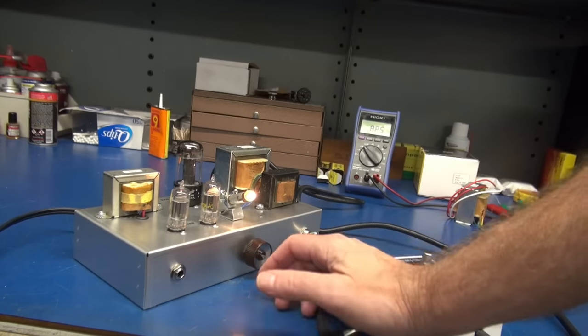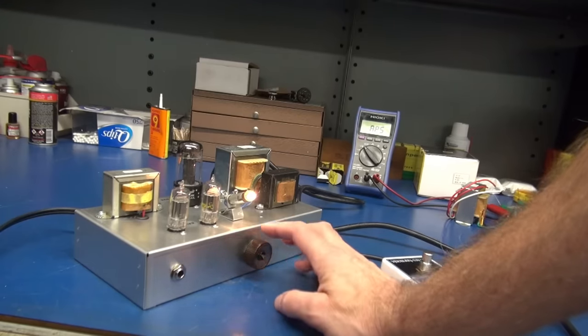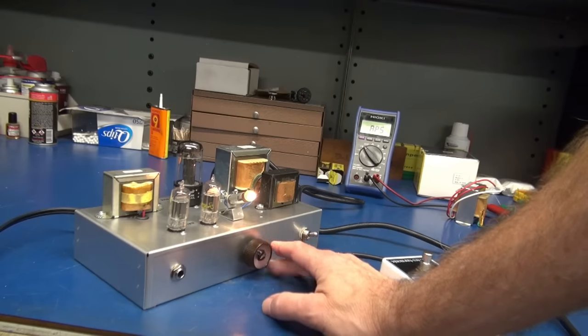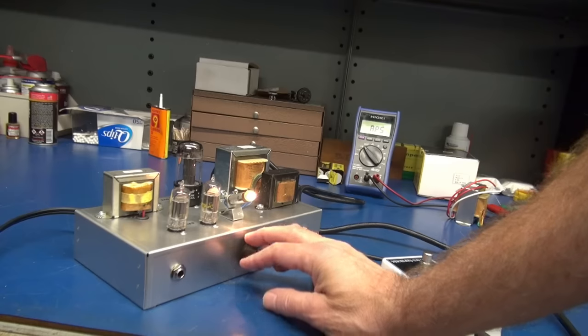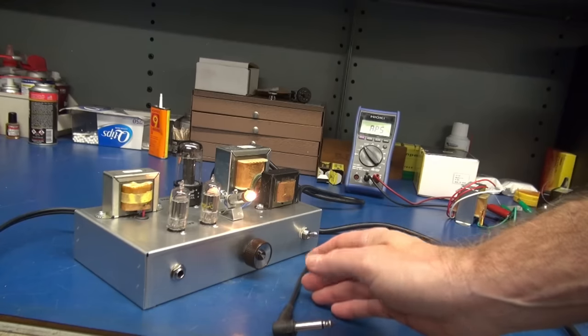I've got the amp powered up. Volume is all the way down. There is absolutely no power supply hum coming from that speaker. Here's full volume. Volume all the way down. Now I'm going to hook up a looper and we'll be able to listen to the amp. But I wanted to point out something first.